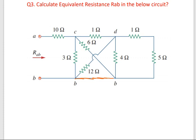From the given figure, three ohms and six ohms are in parallel. The three ohms is connected between nodes C and B, and the six ohms is also connected between C and B — that is why these two are in parallel. Therefore, three parallel to six equals three into six divided by three plus six. If two resistors are connected in parallel, the formula is R1·R2 divided by R1+R2.